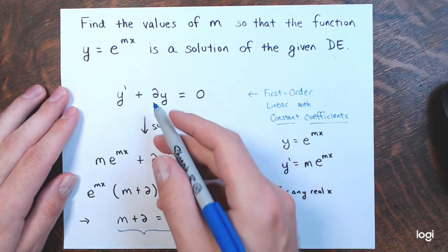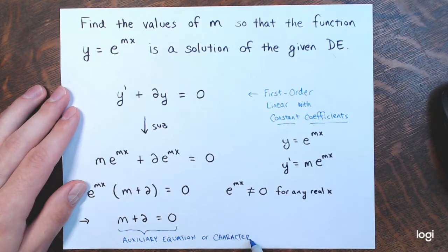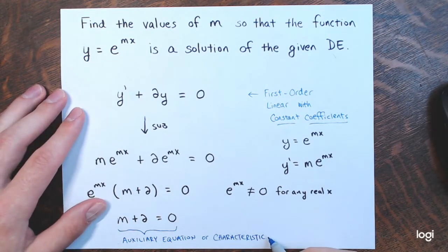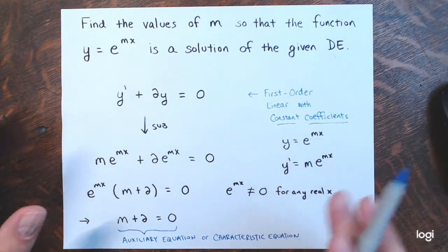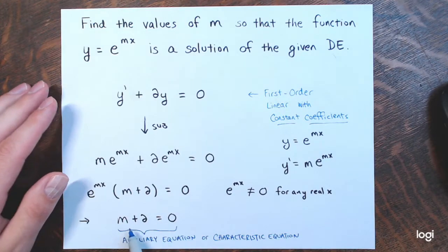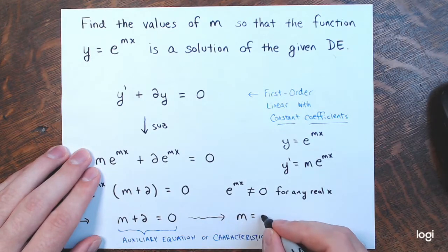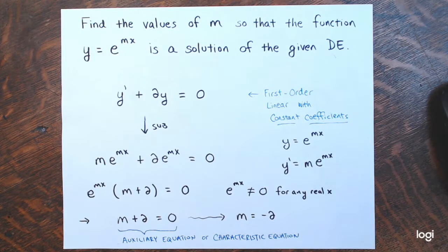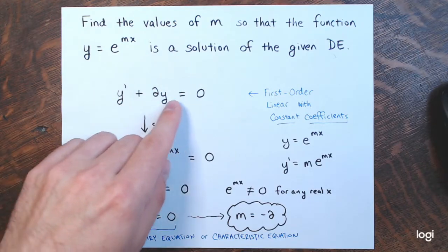This is called the auxiliary equation, or the characteristic equation, corresponding to this differential equation — an nth order linear differential equation with constant coefficients. This polynomial equation in m is very easy to solve: m plus 2 equals 0 when m equals negative 2. The value of m that makes this function a solution of this differential equation is negative 2.